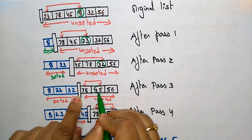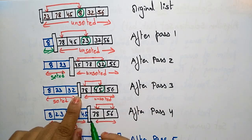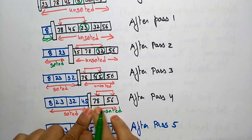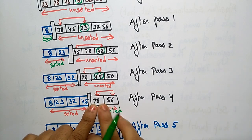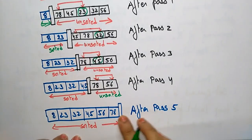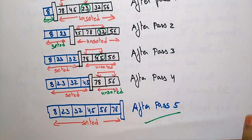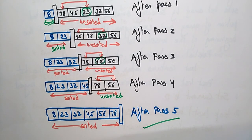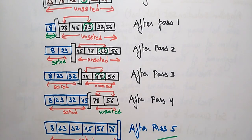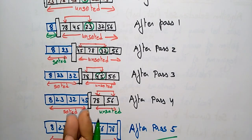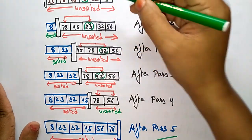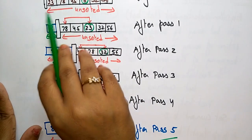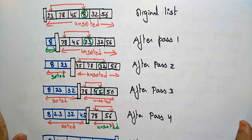45 is the least element — exchange with the beginning element and move it to the sorted list. After pass 4, the remaining unsorted elements are 78 and 56. Just swap them. So this is the final selection sort result — the sorted order. All elements are arranged in ascending order by following the selection sort. Just select the least element and exchange with the beginning of the unsorted element. Thank you.